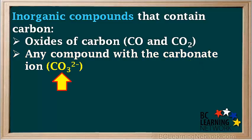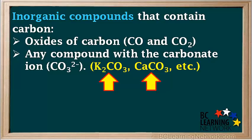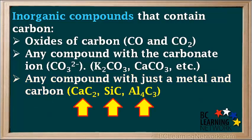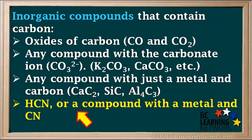Any compound that contains the carbonate ion (CO3 2−) — examples include potassium carbonate K2CO3 and calcium carbonate CaCO3. Any compound with just a metal and carbon, including calcium carbide CaC2, silicon carbide SiC, and aluminum carbide Al4C3. Also hydrocyanic acid HCN, or any compound with a metal and the CN (cyanide) ion, including KCN and NaCN.